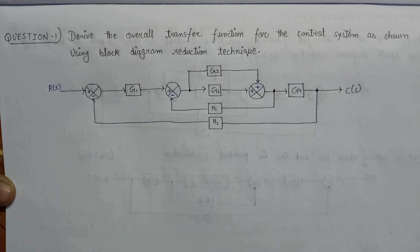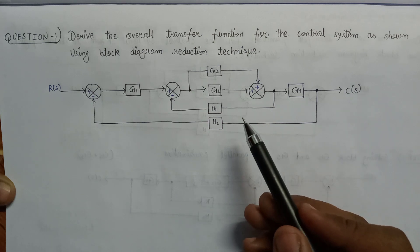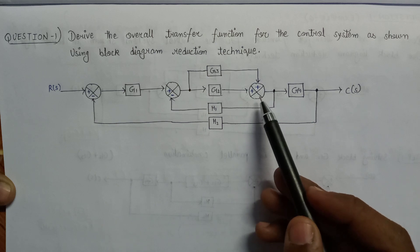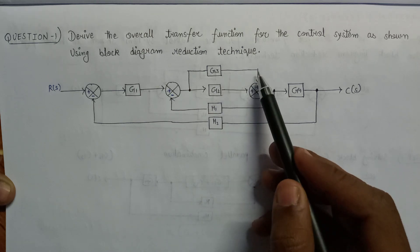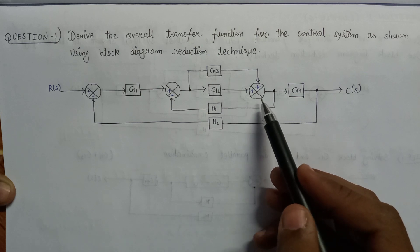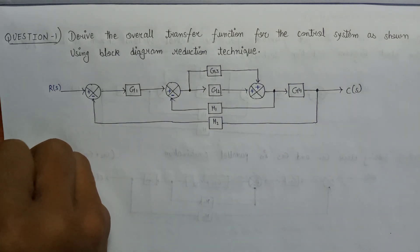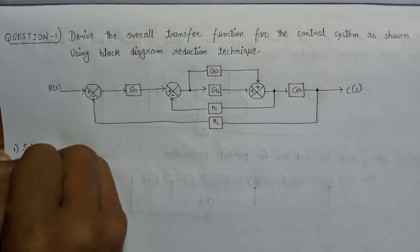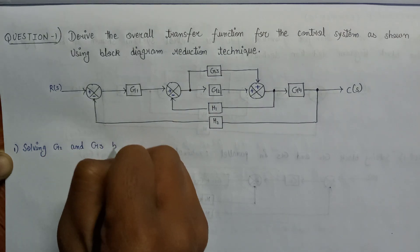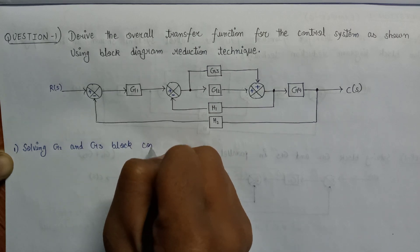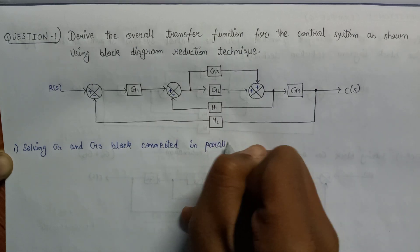Let's start with the block diagram reduction technique. By analyzing this whole control system we can say that the initial starting point would be these two blocks which are connected in parallel combination. Step 1 would be solving the G2 and G3 blocks connected in parallel combination.